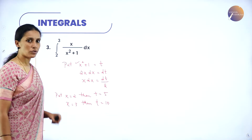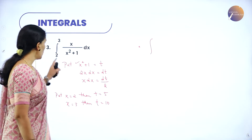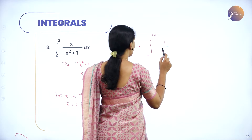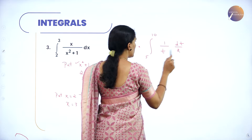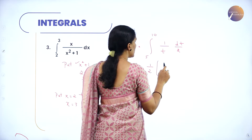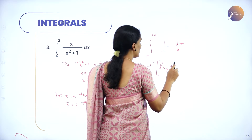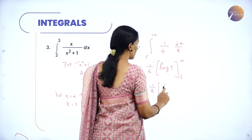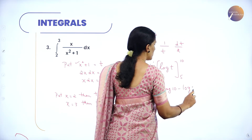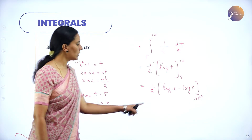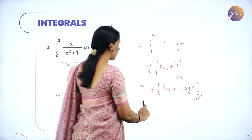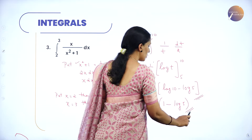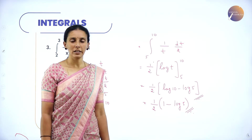Applying the full transformation: the integral becomes (1/2) ∫₅¹⁰ (1/t) dt. The integral of 1/t is log t, so we have (1/2)[log 10 − log 5]. We know log 10 = 1, so this can also be written as (1/2)(1 − log 5). By substituting the value of log 5 you can rewrite and find the final value.